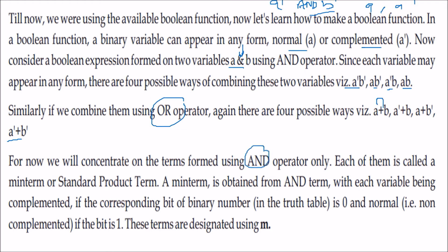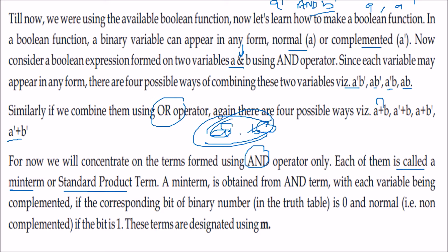The AND combinations are called minterms. When we say a dot b-dash, this is a AND b-complement, and this kind of representation is known as the minterm, also called a standard product term. A minterm is obtained by ANDing these terms. The variable may be complemented if the corresponding bit of the binary number is 0, and normal (non-complemented) if the bit is 1. These terms are designated using lowercase m.